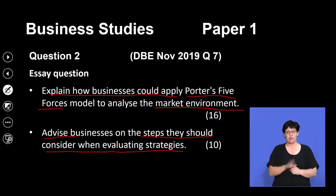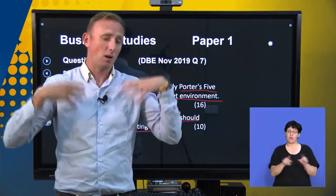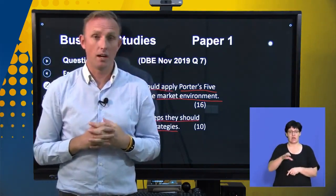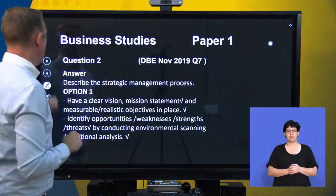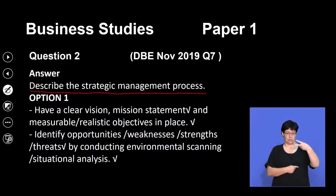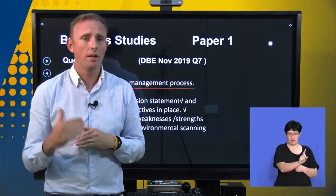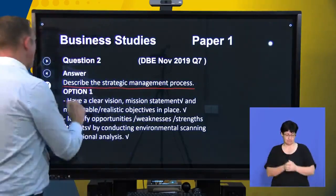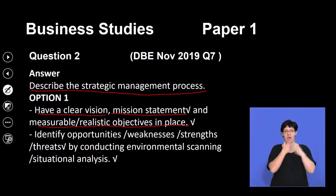I've also given you potential marks that this question could be in section B, as well as how much these particular sections will count if this was just a plain section C essay. For the first question — describe the strategic management process — we've got two options that are both right. So I'm going to go through option one, and then I'll go through option two. Option one: have a clear vision, mission statement, and measurable and realistic objectives in place.